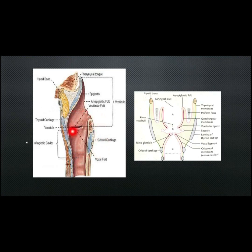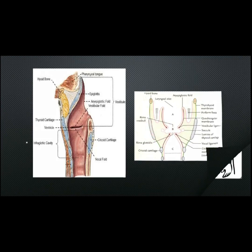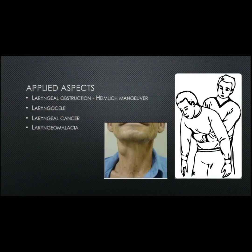The glottic part shows a narrow diverticulum between the vestibular ligament and the lamina of the thyroid cartilage called the saccule, which provides lubrication to the vocal cords and is hence called the oil tank of the larynx.